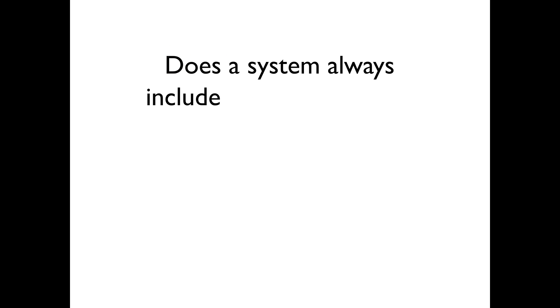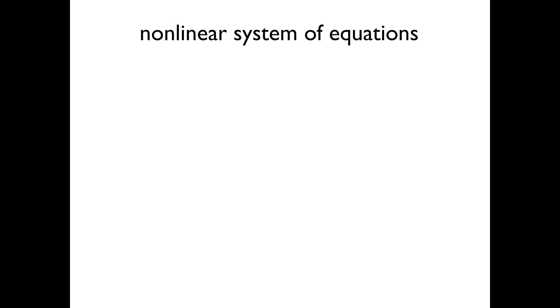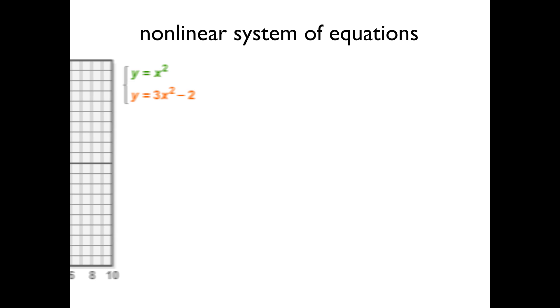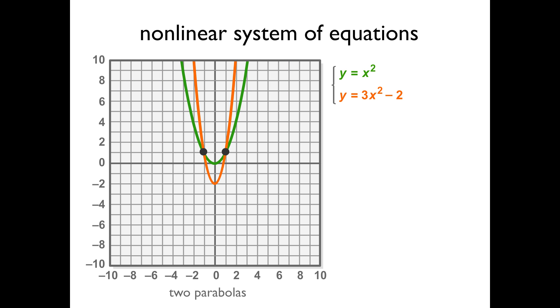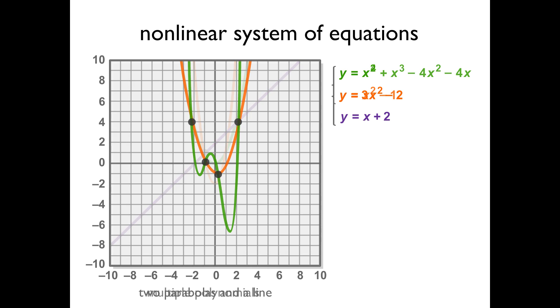Does a system always include a linear equation? A system of equations is not restricted to two lines or even a line and a quadratic. A nonlinear system of equations could be two parabolas, multiple parabolas with a line, or other polynomial equations.